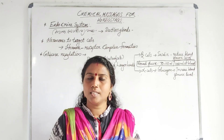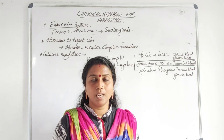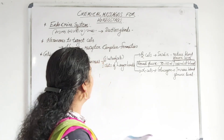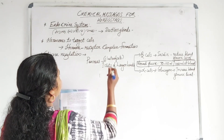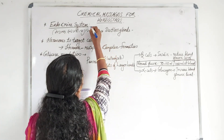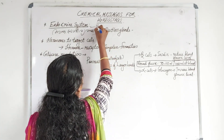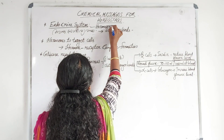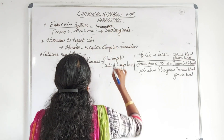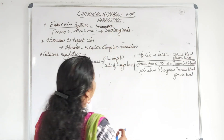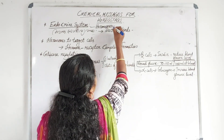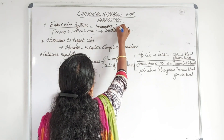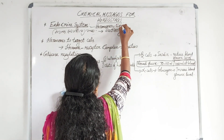The endocrine system especially includes hormones. The secreting organs are called endocrine glands.